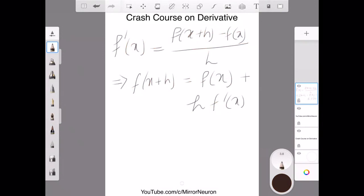So one more thing that we should keep in mind is h is very, very small, and then h square will be equal to 0.